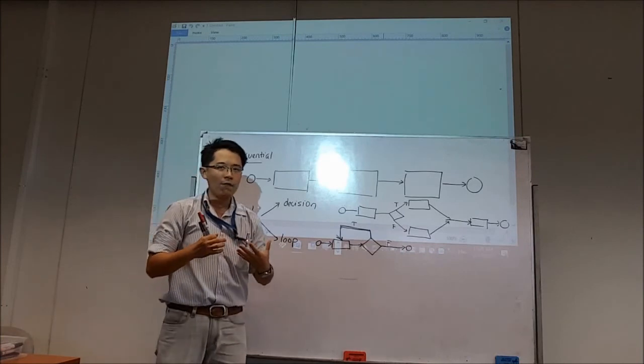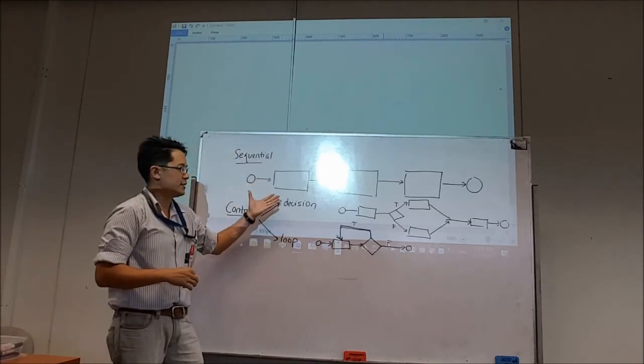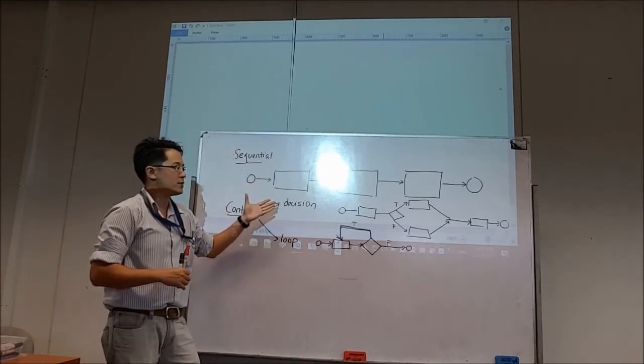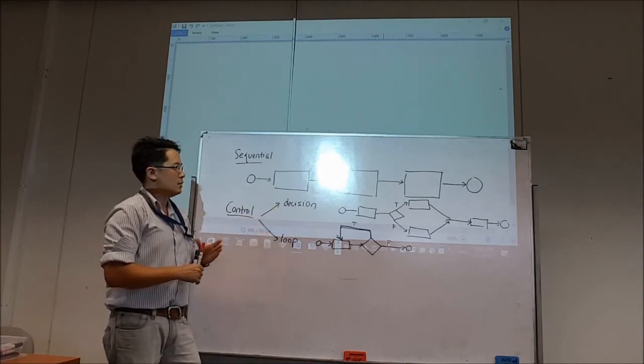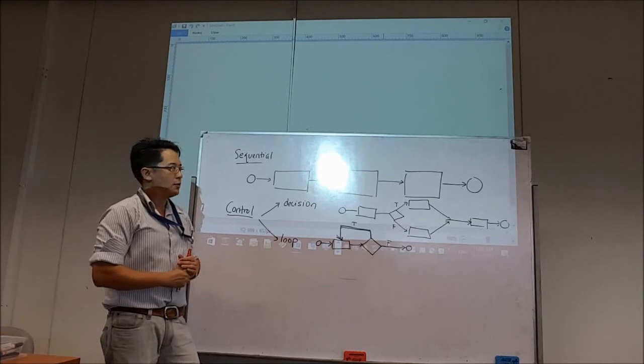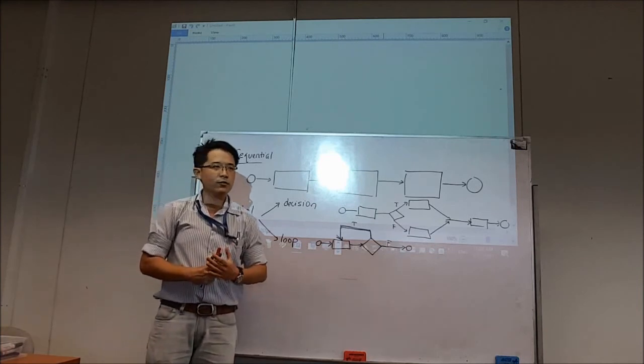Now, there are a few variations of decision control structures and loop control structures. Let's look at them one by one.